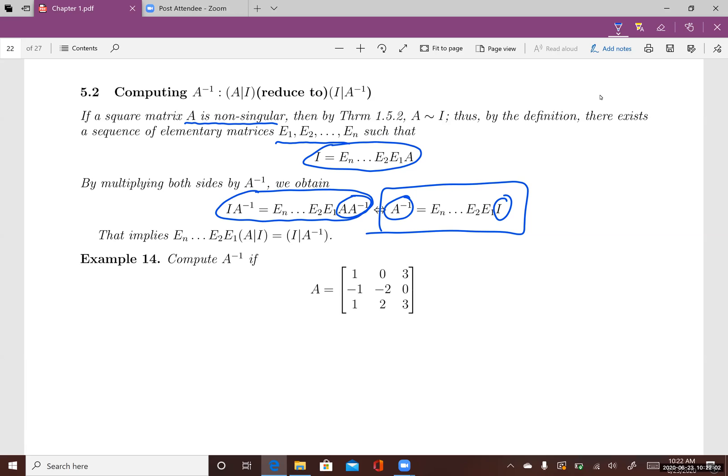You can see that the same elementary matrices that help transform from A to I will transform from I to A inverse. So if you apply the same row operations to A that you use to get to I, then you can use the same row operations from I to get to A inverse. This is how we compute A inverse.